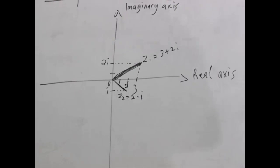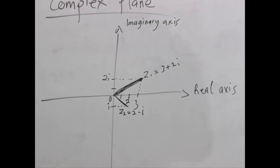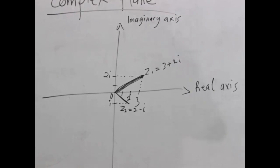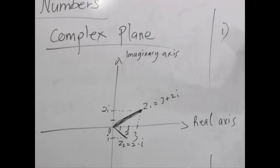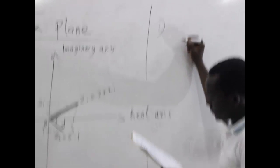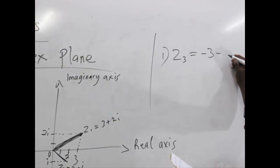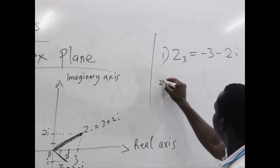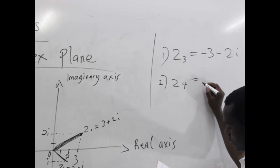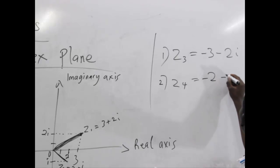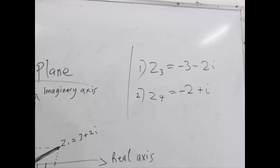Others can also be plotted on the same graph. I will give you two complex numbers to try plotting on the complex plane: Z3 which is equal to negative 3 minus 2i, and Z4 which is minus 2 plus i. Try to plot these as your take-home assignment.